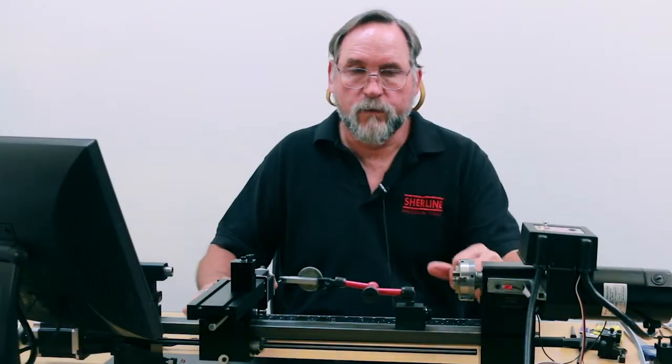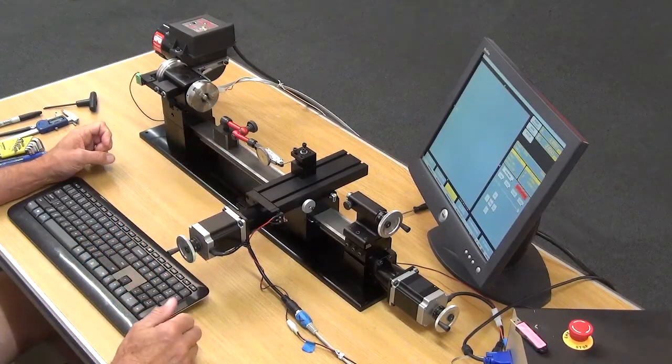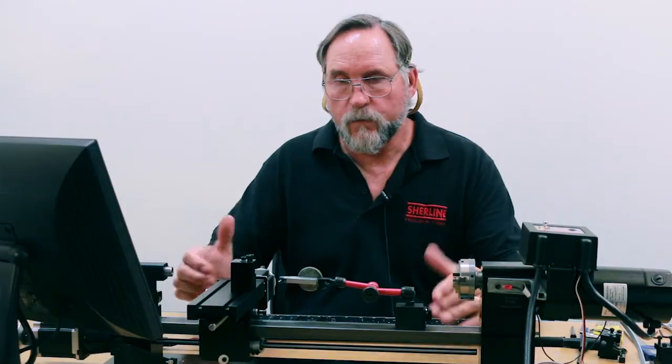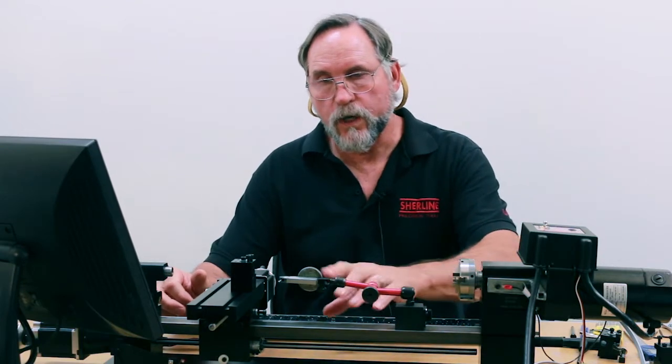I want to go over a couple points before we get started. For starters I'm using a tenths indicator and it's a quality indicator. The most critical thing on checking your backlash is making sure that your setup is correct.